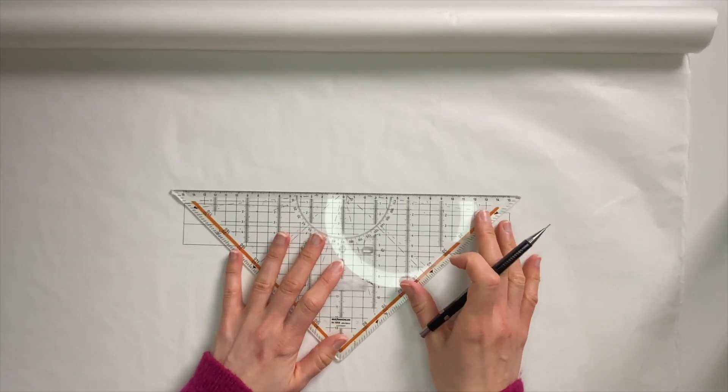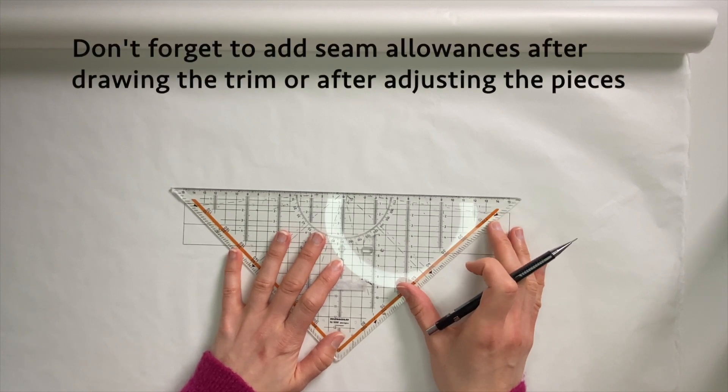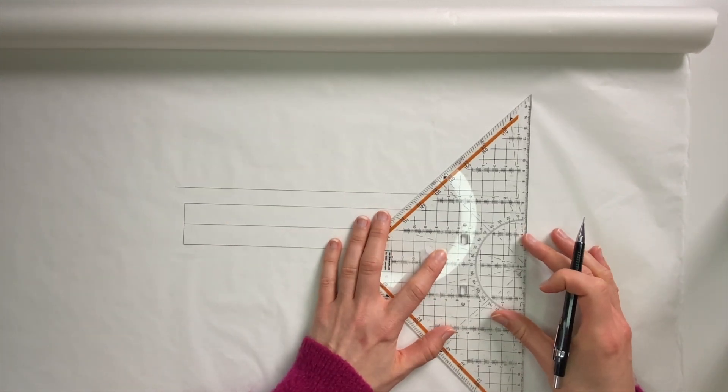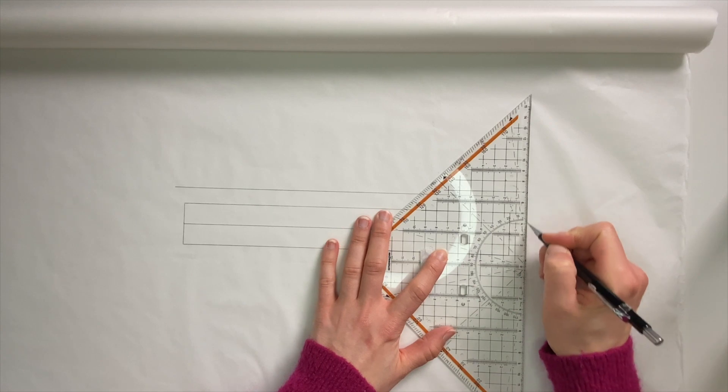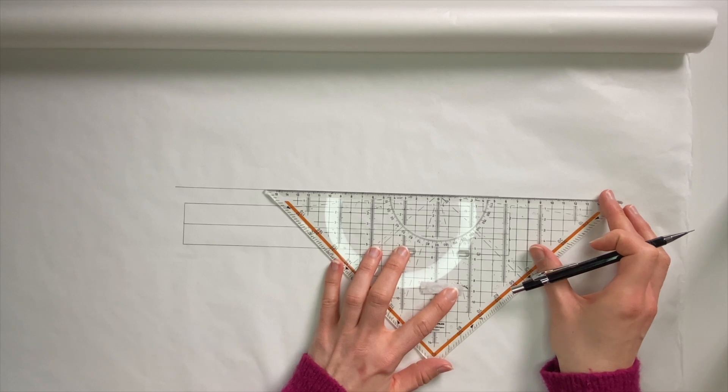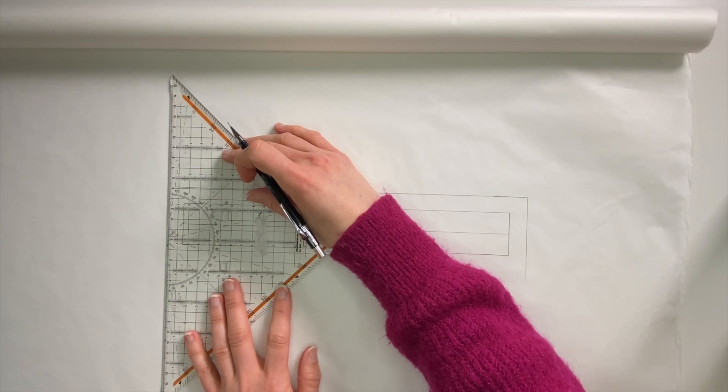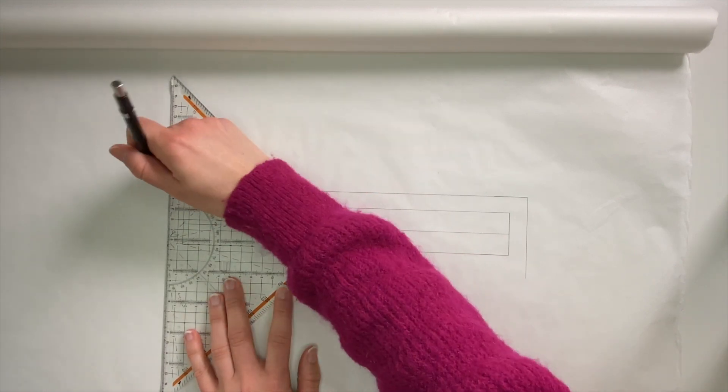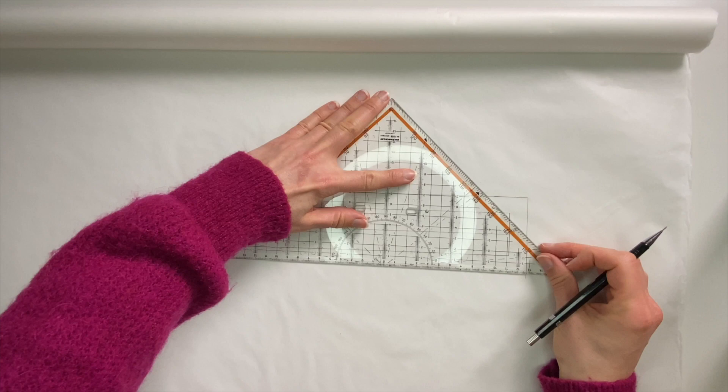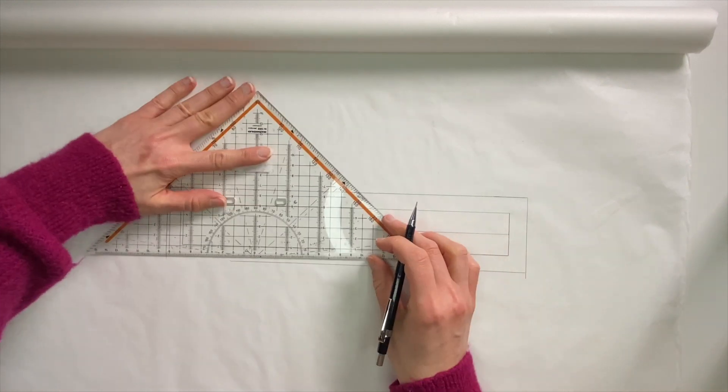Now to add the allowances, it's just 1.5 on each side. I will add it so you'll have an idea how it looks like.